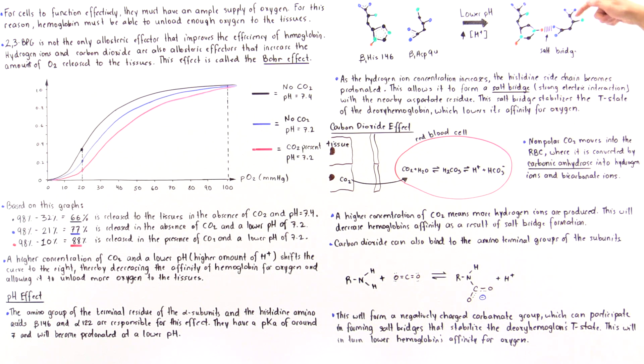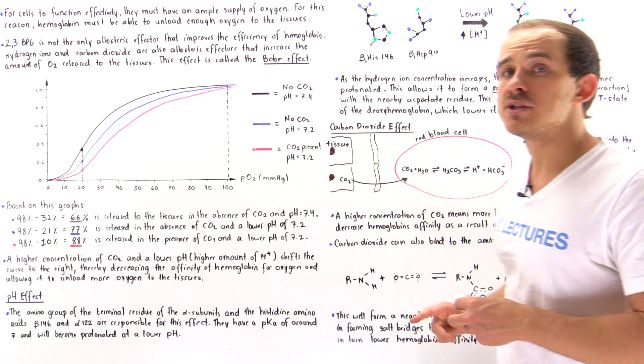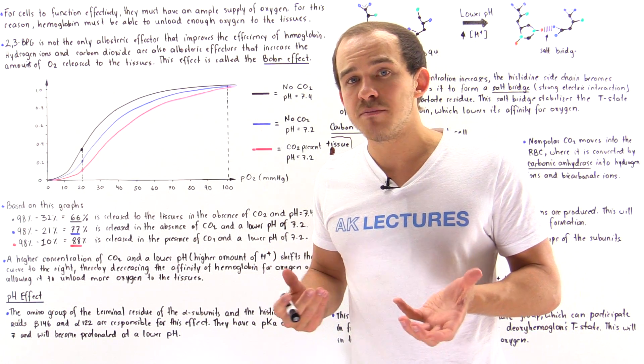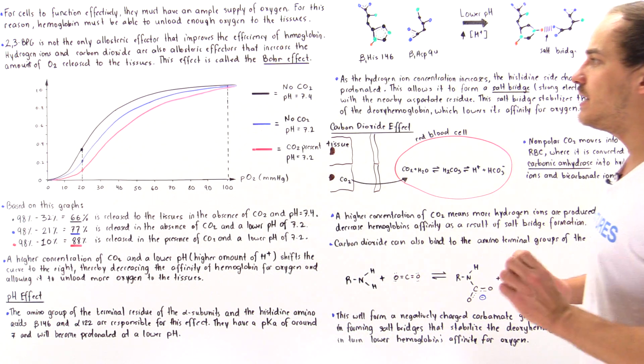And just like we form salt bridges in this case, this can also form, the carbamate can also form a salt bridge, thereby stabilizing the entire T-state structure of the deoxyhemoglobin.